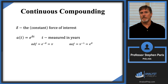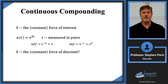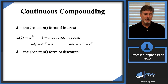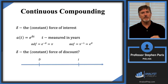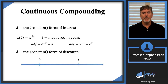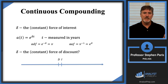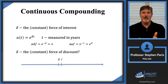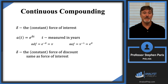I've seen the term 'force of discount' used on exams and it has confused students. Let's think about what it means. I went through the last ten minutes discussing an interest scenario — what if we were in a discount scenario instead? Interest is paid at the end of a period and discount is paid at the beginning. With continuous compounding, the period length shrinks to zero, so there's no difference between the beginning and end of the period in the limit. Therefore, the force of discount is exactly the same as the force of interest.